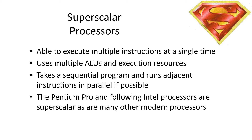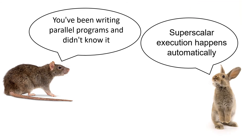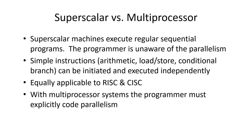Intel processors have been doing this for some time, since the beginning of the Pentium Pro. So you've been writing parallel programs all this time and didn't know it. Superscalar execution happens automatically. Superscalar processors execute the regular sequence of instructions — the programmer doesn't have to do anything to make the parallelism occur, although it does help if you write instructions that don't have hazards. All instructions can be executed independently, and this works for both RISC and CISC computers.